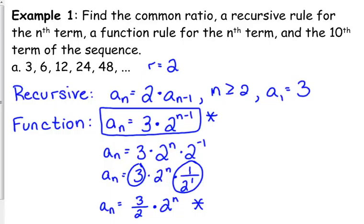When I find the 10th term, I'm going to do it with both just to show you that it does give you the same thing. When I plug into the first one, a sub 10 equals 3 times 2 to the 10 minus 1. So that's equal to 3 times 2 to the 9th.